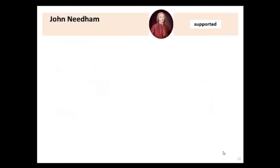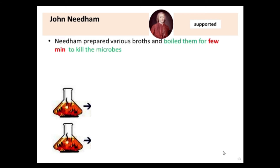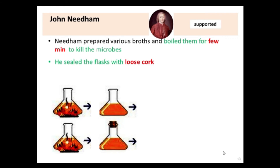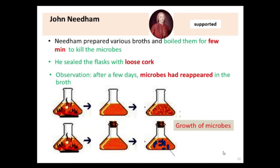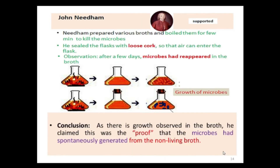John Needham supported the theory of spontaneous generation and did experiments to support it. In his experiment, Needham prepared various broths, boiled them for a few minutes to kill the microbes, then sealed the flask with a loose cork. After a few days he observed that microbes had reappeared in the broth. He concluded that this was proof that microbes had spontaneously generated from the non-living broth.